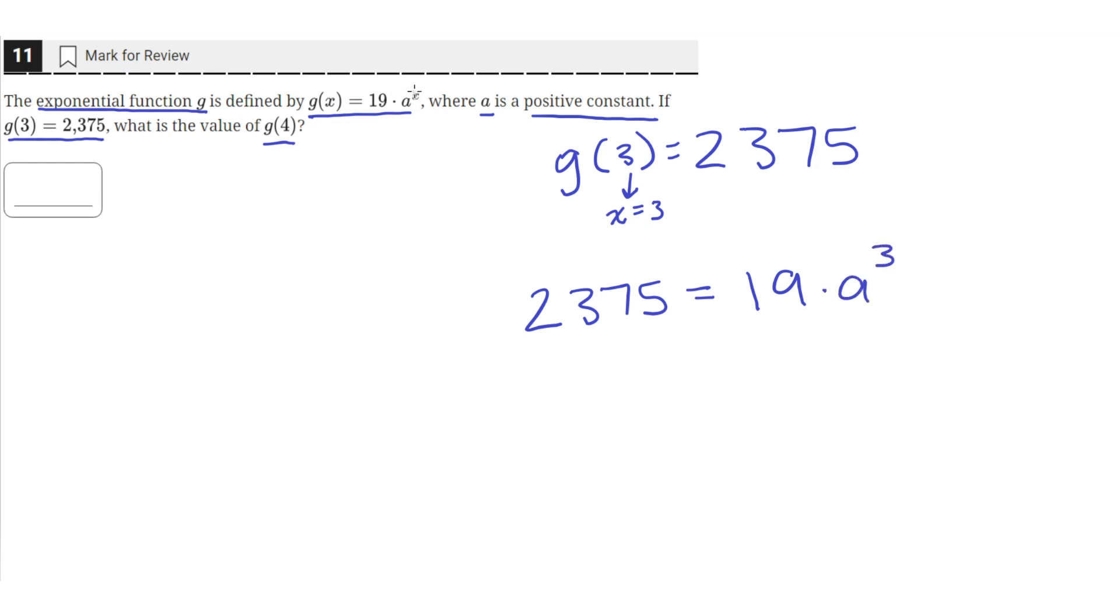We just plugged in x equals 3 and g of x is 2375. So now we can solve for the value of a. If we divide both sides by 19, we get that 125 equals a raised to the third power.